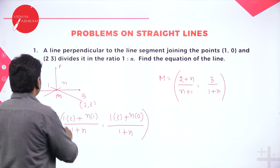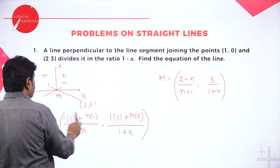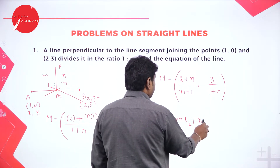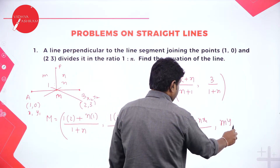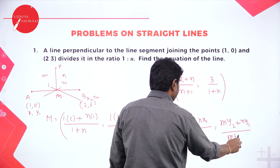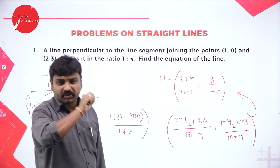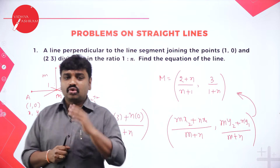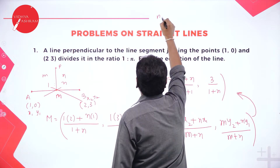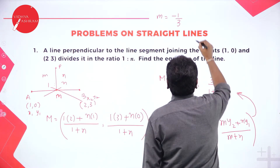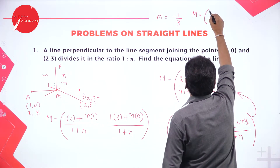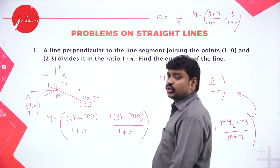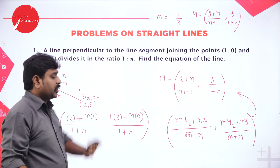Now we know slope M equals minus 1 by 3, and we know a point on the line: ((2+N)/(1+N), 3/(1+N)). Once you know slope and point, you can use point slope form to find the equation of the line. Required line is y minus y1 equals M into x minus x1.